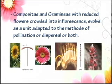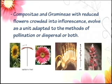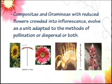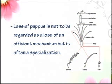Compositae and Gramineae, with reduced flowers crowded into inflorescences, evolved as a unit adapted to the methods of pollination or dispersal. The loss of parts is not to be regarded as a loss of an efficient mechanism, but it is often a specialization.